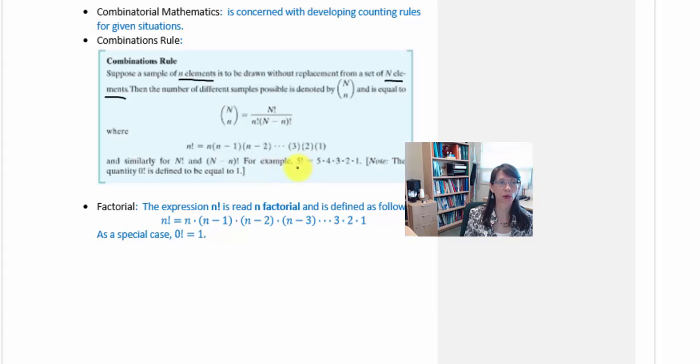For example, 5 factorial means 5 times 4 times 3 times 2 times 1. This will allow us to do a bit of reducing when we work through the reference for class material today.